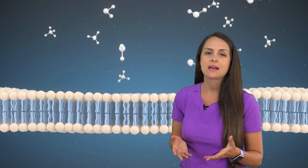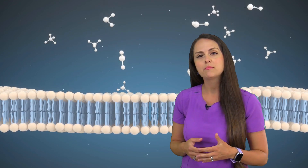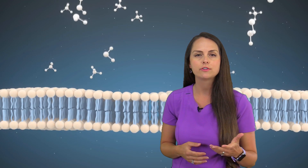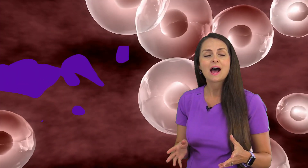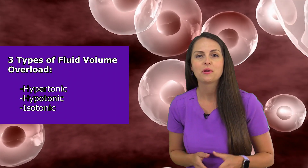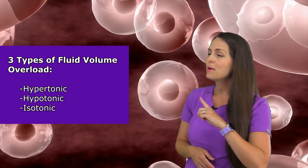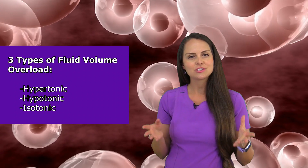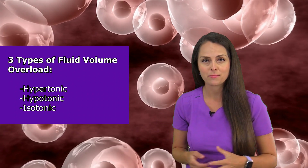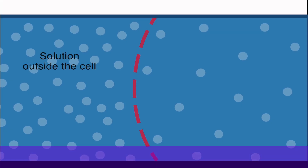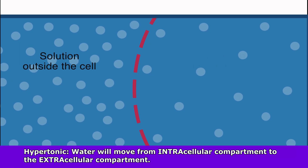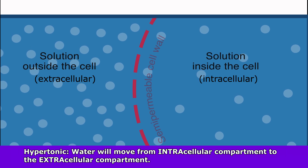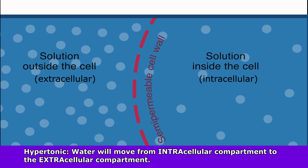These are all important concepts to help you understand the different types and causes of fluid volume overload. There are three types: hypertonic, hypotonic, and isotonic. With hypertonic fluid volume overload, there's going to be the movement of water from the intracellular compartment to the extracellular compartment.